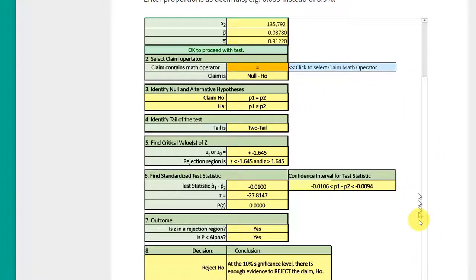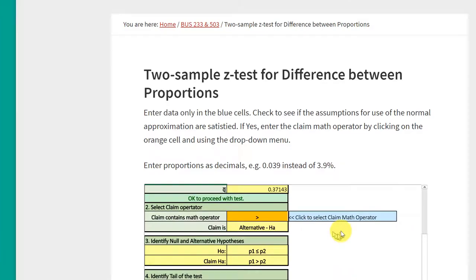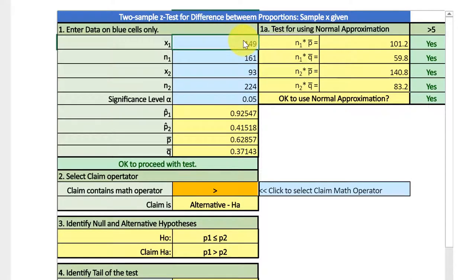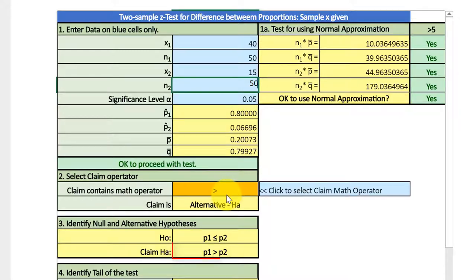There's our calculator, and if you go down to the bottom you'll see that there's two tabs, one is for where you're given the proportions or in this case where we're given our sample X's. So I'm going to click on that tab to bring up this particular spreadsheet. Here we were given that our sample one for P1 was 40, our N was 50, our X2 was 15, our N2 was 50, our significance level alpha was 0.05, and we're going to leave the claim operator greater than because that was the thrust of the question: is P1 greater than P2?